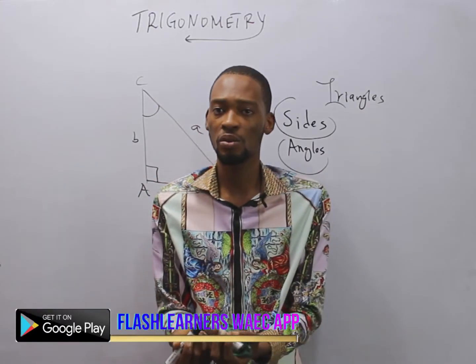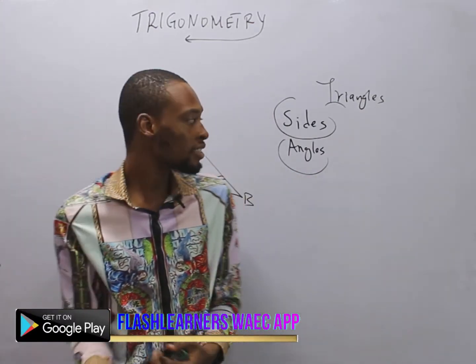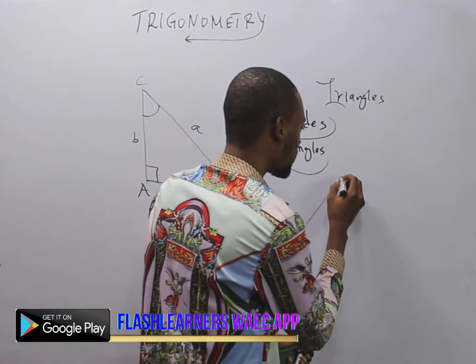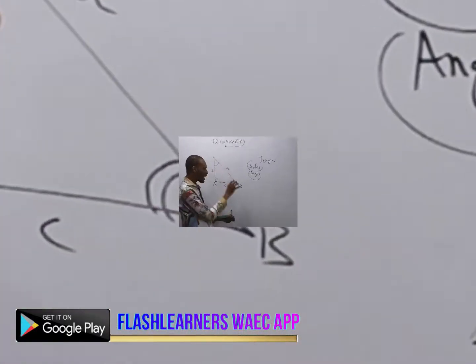We have equilateral triangle. In equilateral triangle, all the sides and angles are equal.